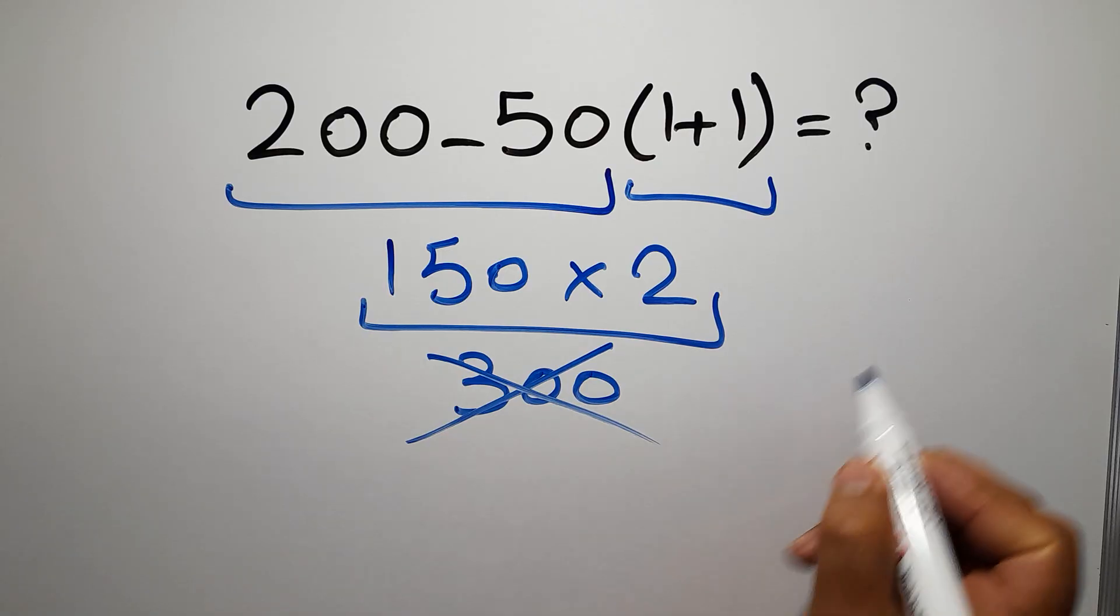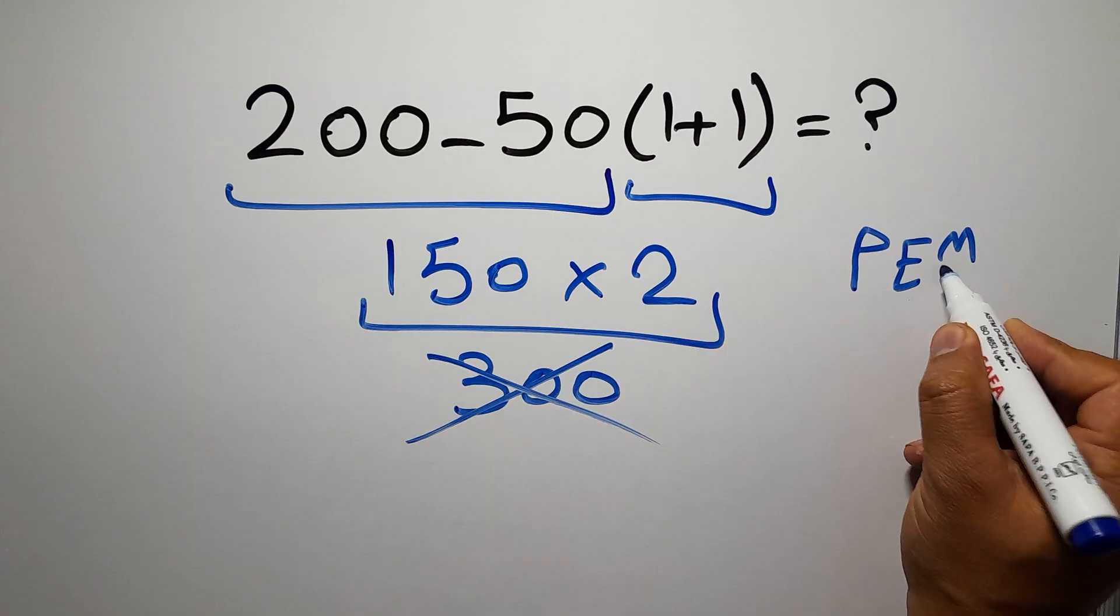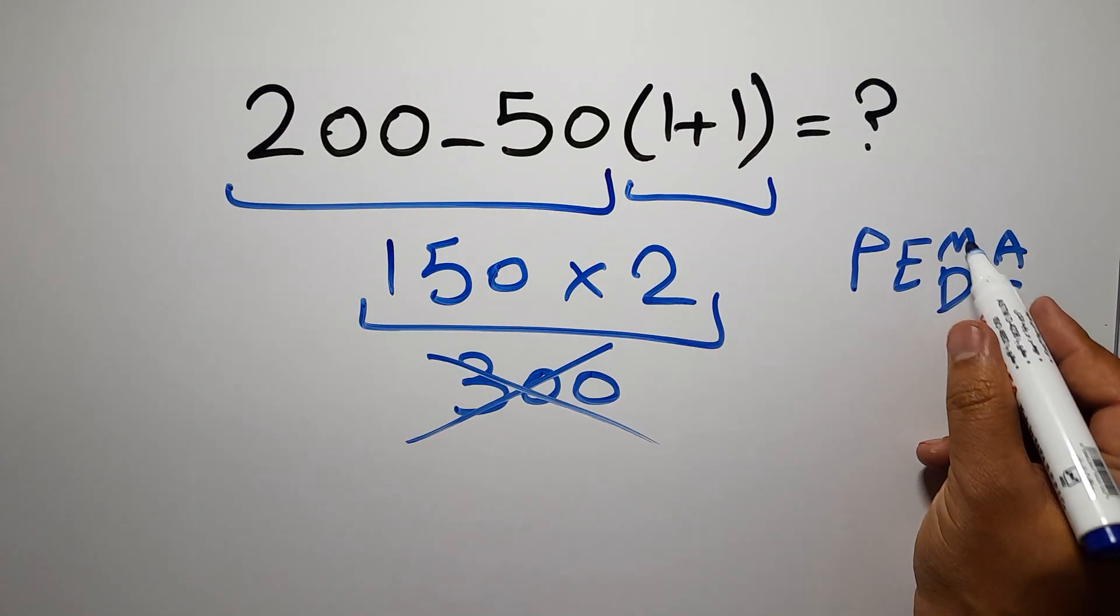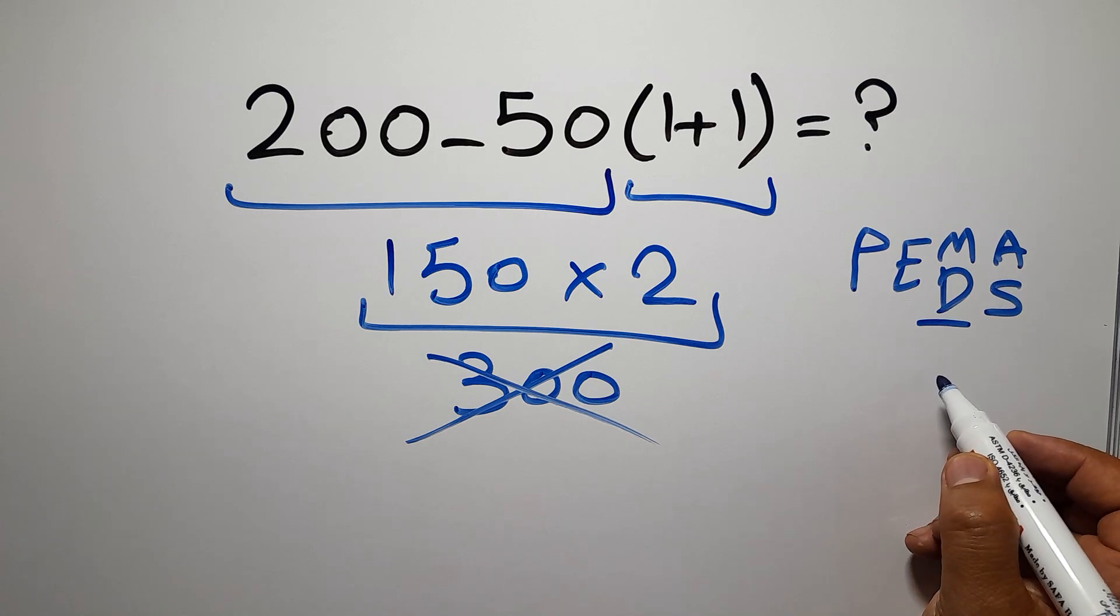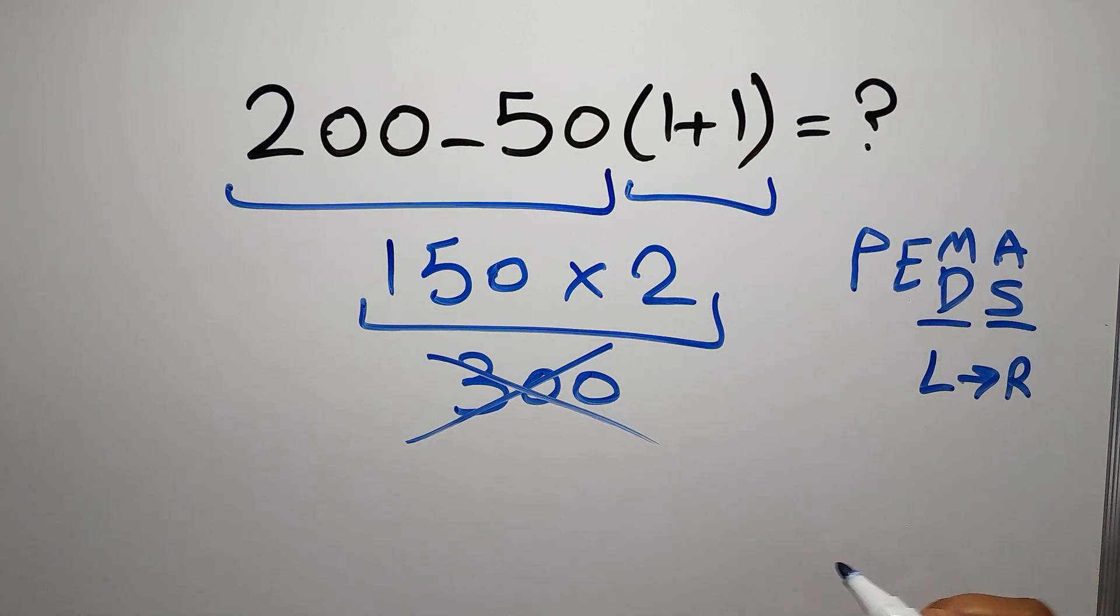because according to the order of operations, first we have to do parentheses, then exponents, then multiplication or division, and finally addition or subtraction. Remember that multiplication and division have equal priority, and we have to work from left to right, and the same applies to addition and subtraction.